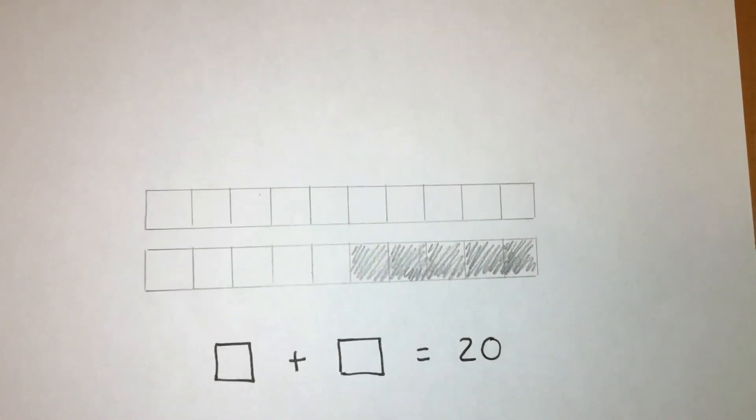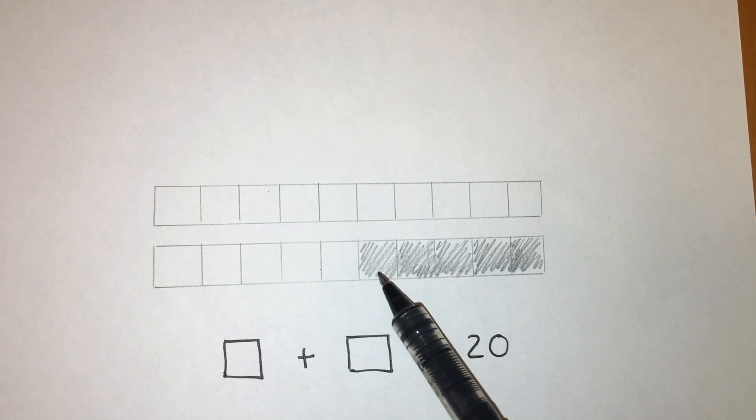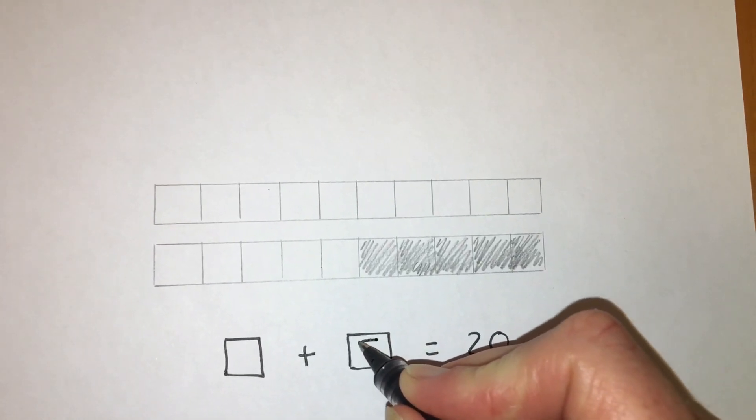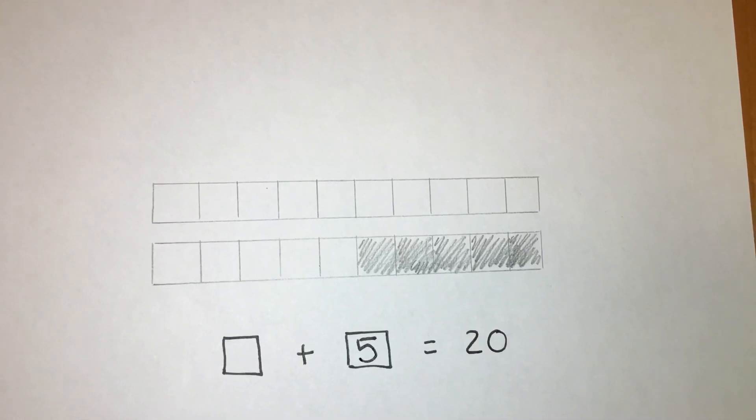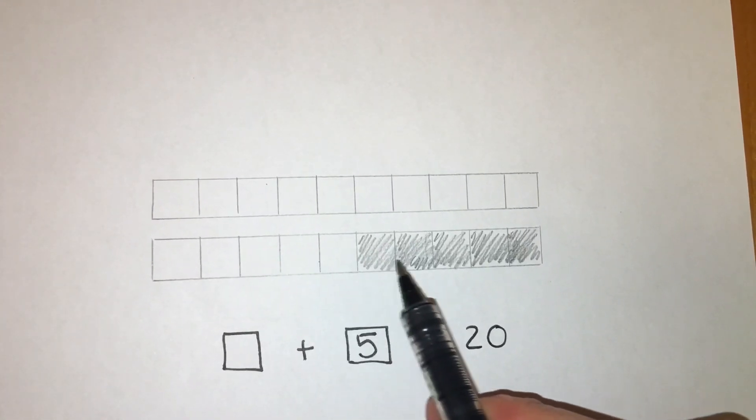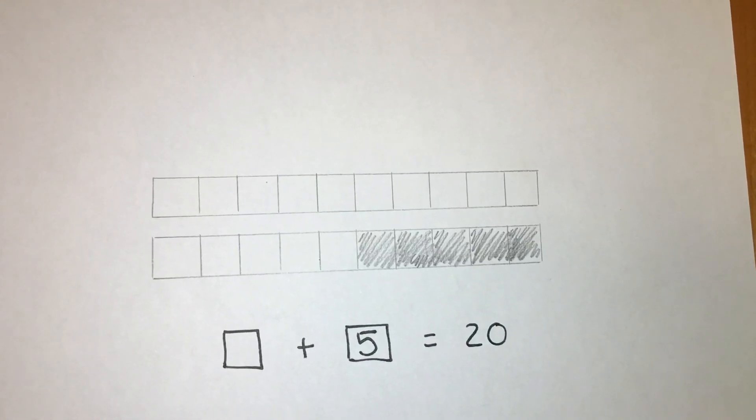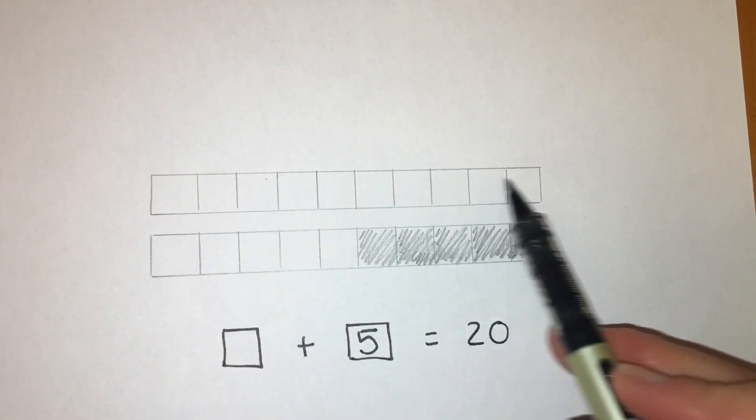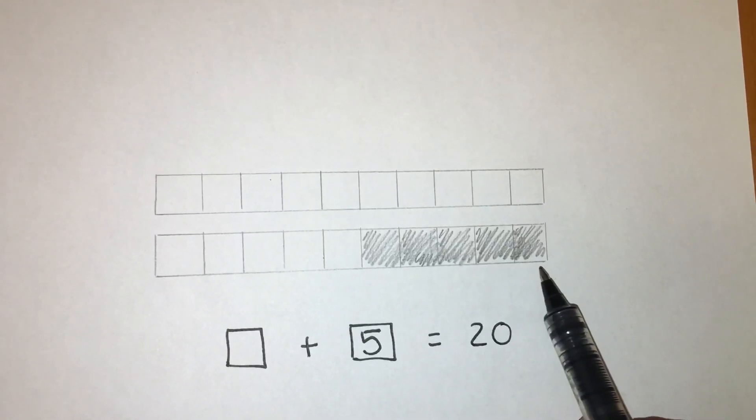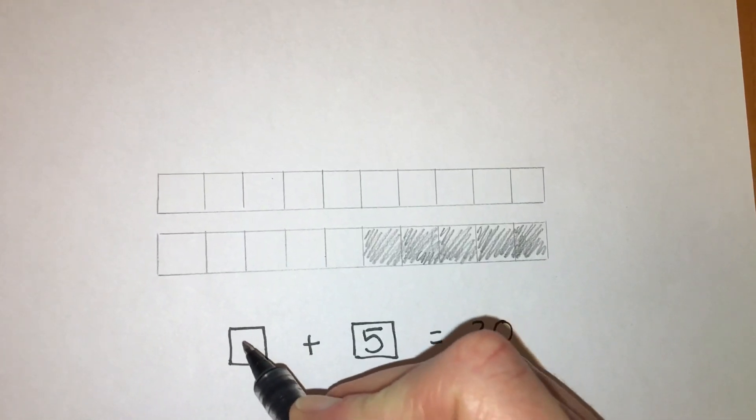Another example. Again, how many have we got shaded? 1, 2, 3, 4, 5. So it's something plus 5 equals 20. Well, what plus 5 equals 10? 5 plus 5 equals 10, doesn't it? So it must be 10 and 5 more. Plus 5 equals 20. So we know that's 15.